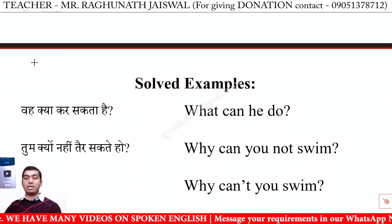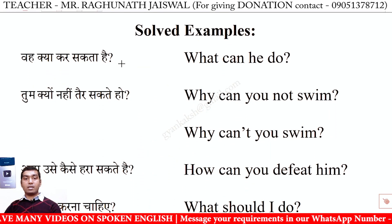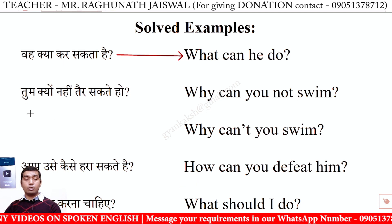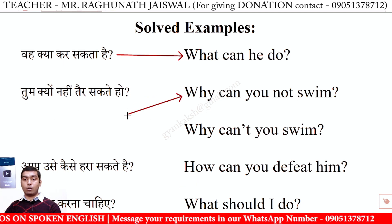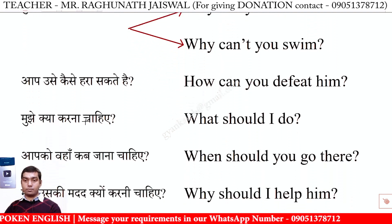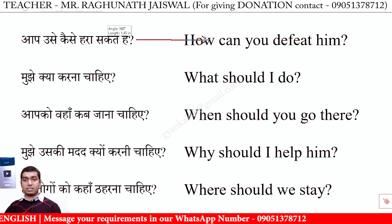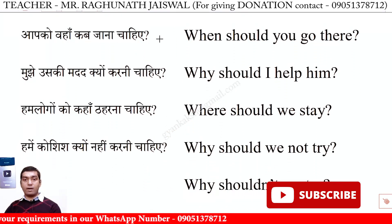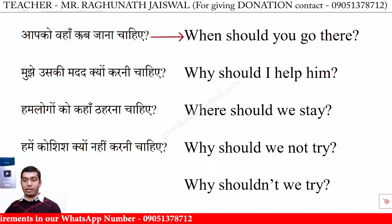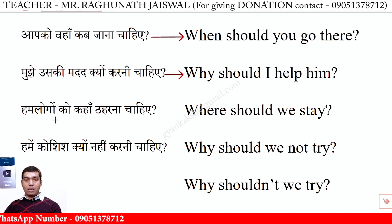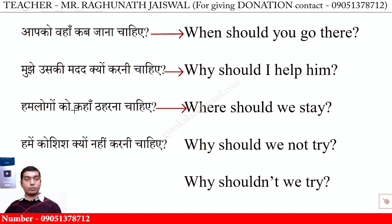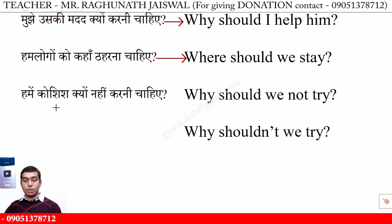आईए कुछ और solved examples देखिए। वह क्या कर सकता है? — What can he do? तुम क्यों नहीं तैर सकते हो? — Why can you not swim? / Why can't you swim? आप उसे कैसे हरा सकते हैं? — How can you defeat him? मुझे क्या करना चाहिए? — What should I do? आपको वहां कब जाना चाहिए? — When should you go there? मुझे उसकी मदद क्यों करनी चाहिए? — Why should I help him? हम लोगों को कहां ठहरना चाहिए? — Where should we stay? हमें कोशिश क्यों नहीं करनी चाहिए? — Why should we not try? Short form: Why shouldn't we try?